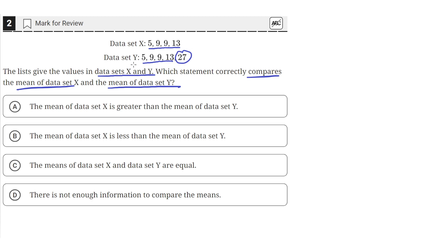So that means the mean of data set Y is greater than X because it has this large 27 in it, which increases the mean above the mean of data set X.